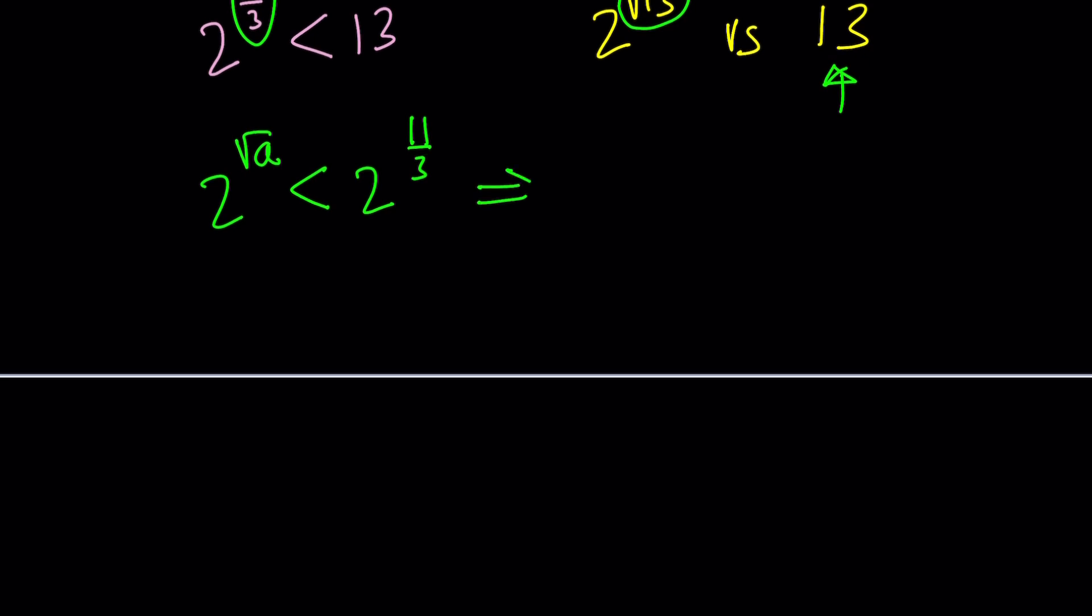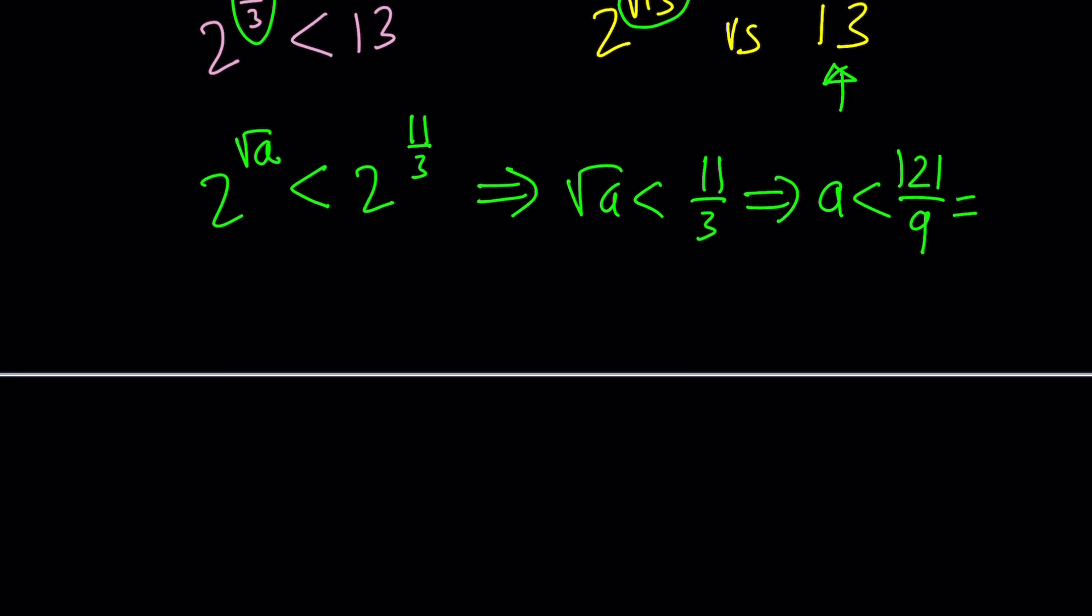So, this implies root A is less than 11 thirds. And this implies A is less than 120 over 9. And 121, I'm sorry, 121 over 9 is 13 and 4 ninths because 13 times 9 is 117. Nice.